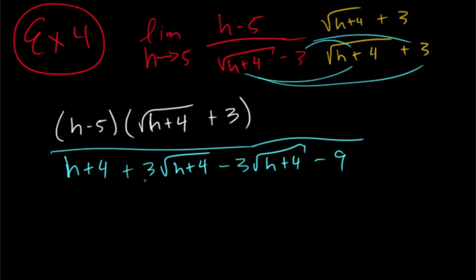Now the nice thing is, these are opposites, so they cancel out. And this and this are going to leave us with a bottom that is just h minus five.